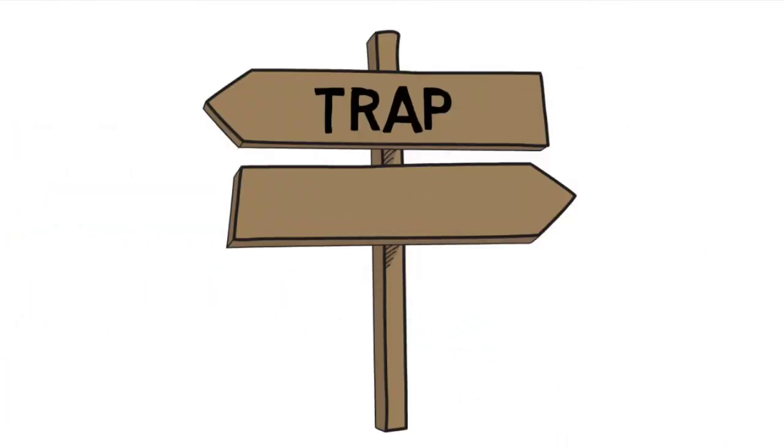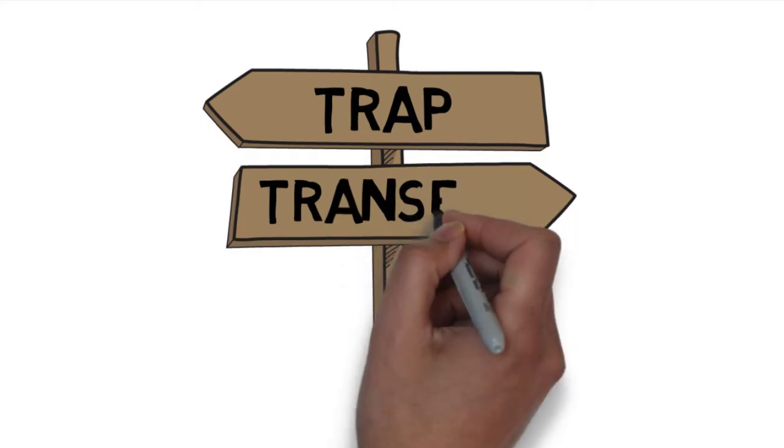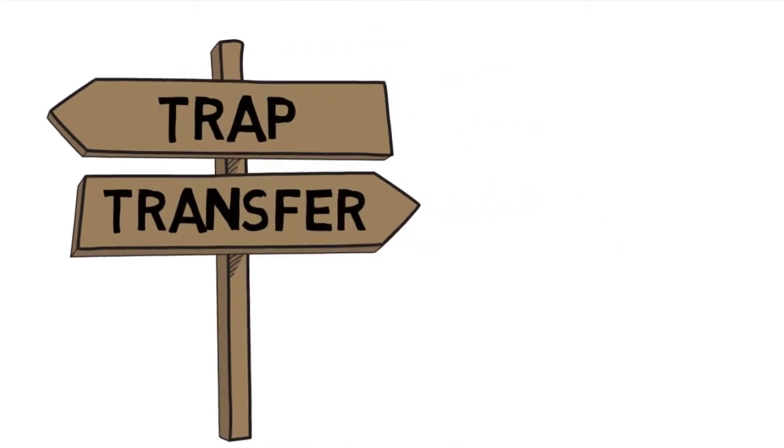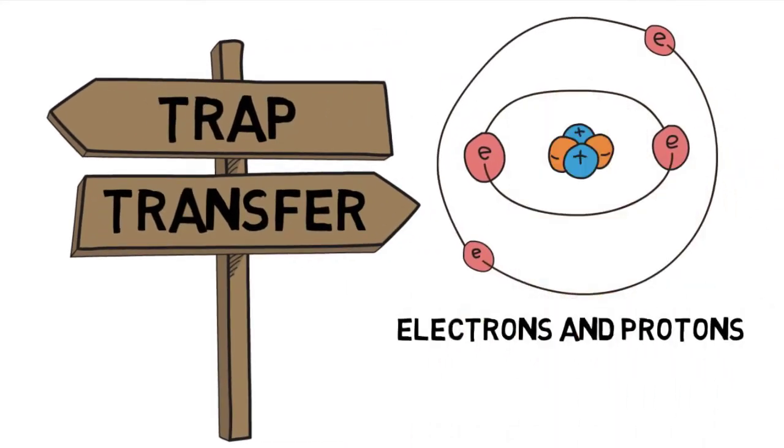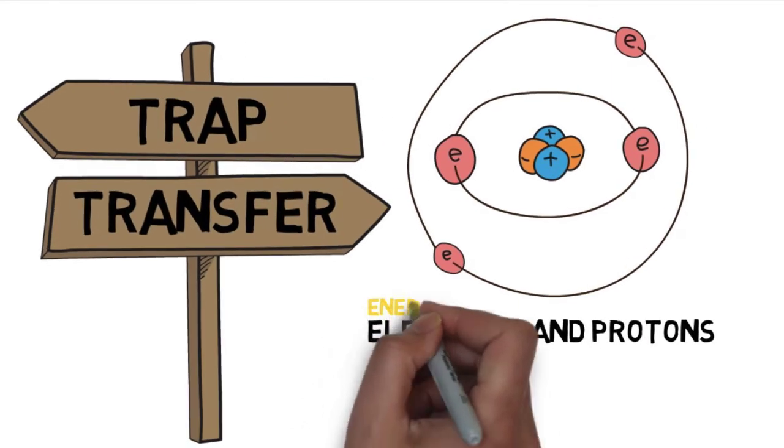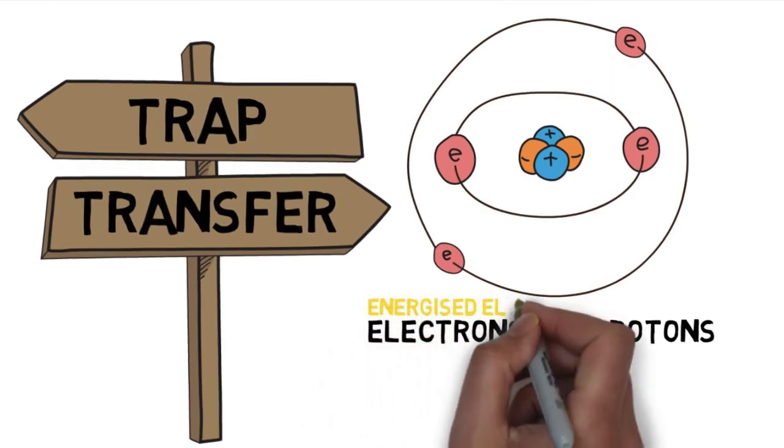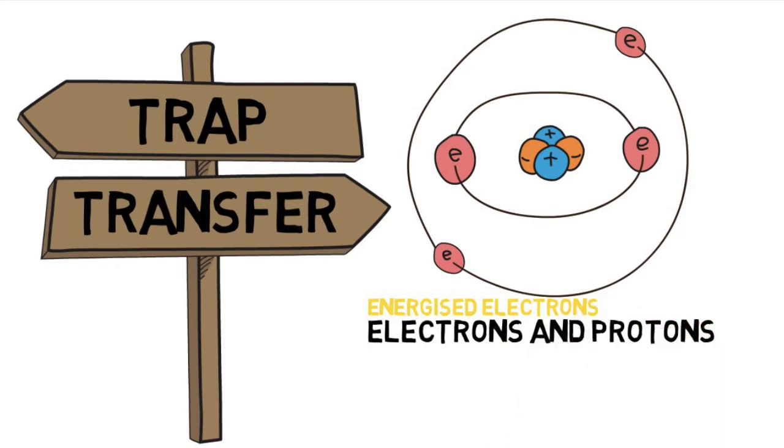So acting as a carrier molecule, NADP is going to trap and transfer two important products: electrons and protons. It's most important that you remember that the electrons that are going to be trapped are energized electrons.